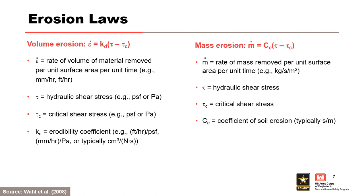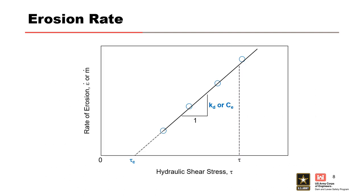Erosion can be expressed as either volume erosion or mass erosion using the excess shear equation. The erodibility parameters that define these equations are the critical shear stress along with the erodibility coefficient, sometimes referred to as the detachment rate coefficient for volume erosion and coefficient of soil erosion for mass erosion. Since the rate of erosion depends on the level of shear stress due to traction of the eroding fluid, the rate of erosion is usually normalized against shear stress.